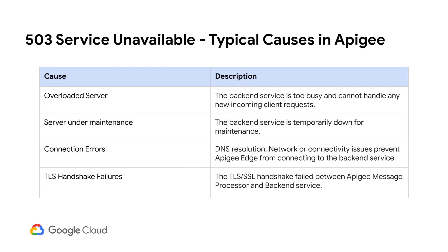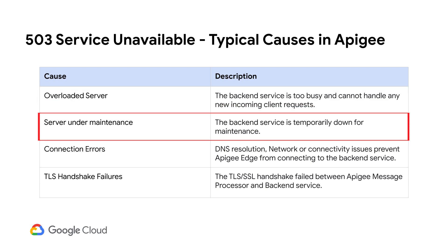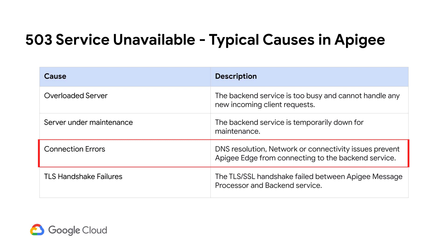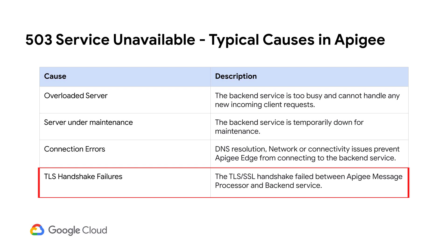Here are some of the typical causes that lead to 503 Service Unavailable Errors in APG Edge. The 503 errors can occur when the back-end server is overloaded or too busy to accept new requests, or is down due to maintenance. These errors can also occur when APG Edge's message processors are unable to establish a connection with the back-end service. This could be due to DNS resolution issues, network connectivity issues, or due to unexpected network failures. In addition, failures during the TLS Handshake process between APG Edge and the back-end service can also lead to 503 errors.